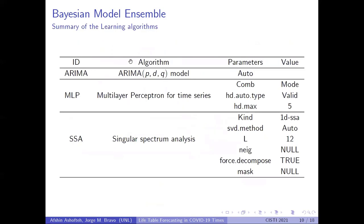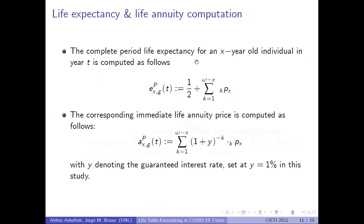This is a summary of the hyperparameter calibration of the three learning algorithms. Once we generate forecasts for the age-specific mortality rates, we compute the period life expectancy and the life annuity price using the classical formulas, applying a one percent discount interest rate for computing the life annuity prices.